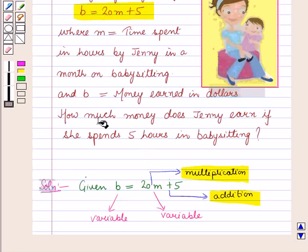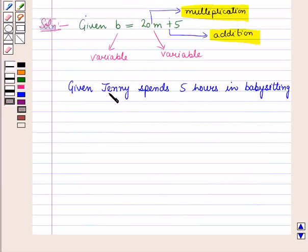And now we have to find how much money does Janie earn if she spends 5 hours in babysitting. Now here it is given that Janie spends 5 hours in babysitting. This means here it is given that M equals 5.